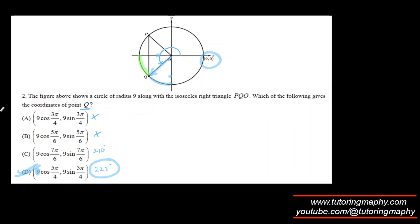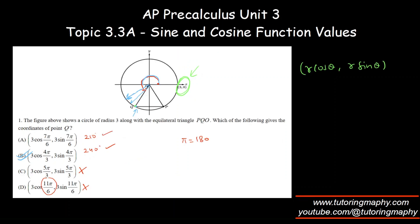They also noted at the top that this is an isosceles right triangle, so the angles are 45 and 45. That corroborates our answer further because 180 plus 45 is 225, which is indeed this option.